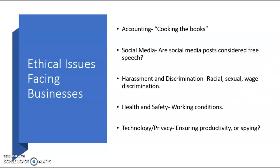A third example is harassment and discrimination. With this, we see racial, sexual, and wage discrimination. This is one of the unethical issues regarding the physical attributes that it takes on people. Obviously, racial, sexual, and race discrimination is terrible if a business is running like that.